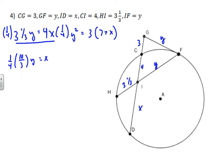And 10/3 times 1/4 is 10/12, or 5/6 y. So now I plug that back in to this equation, and I get y² equals 3 times 7 plus 5/6 y.